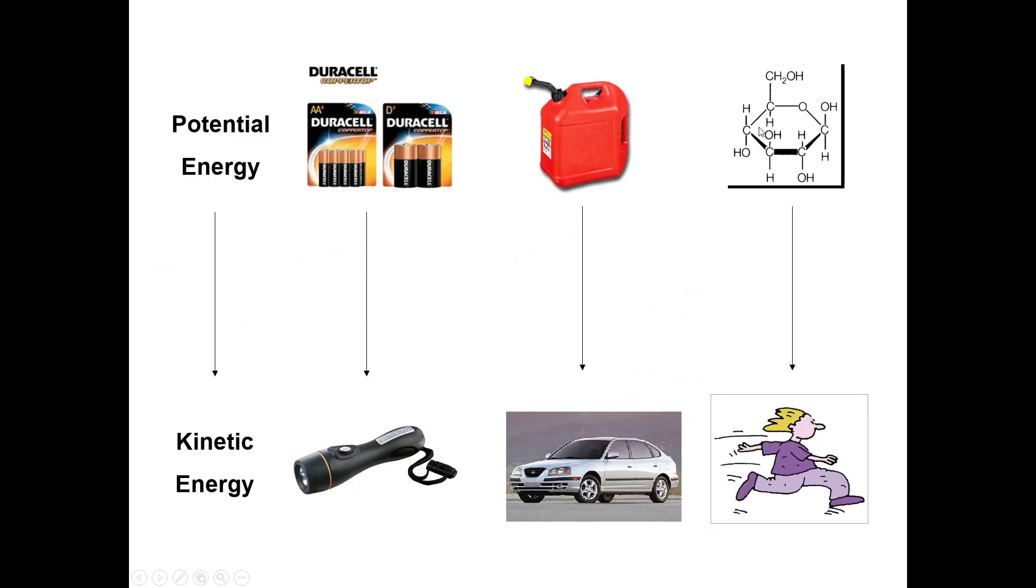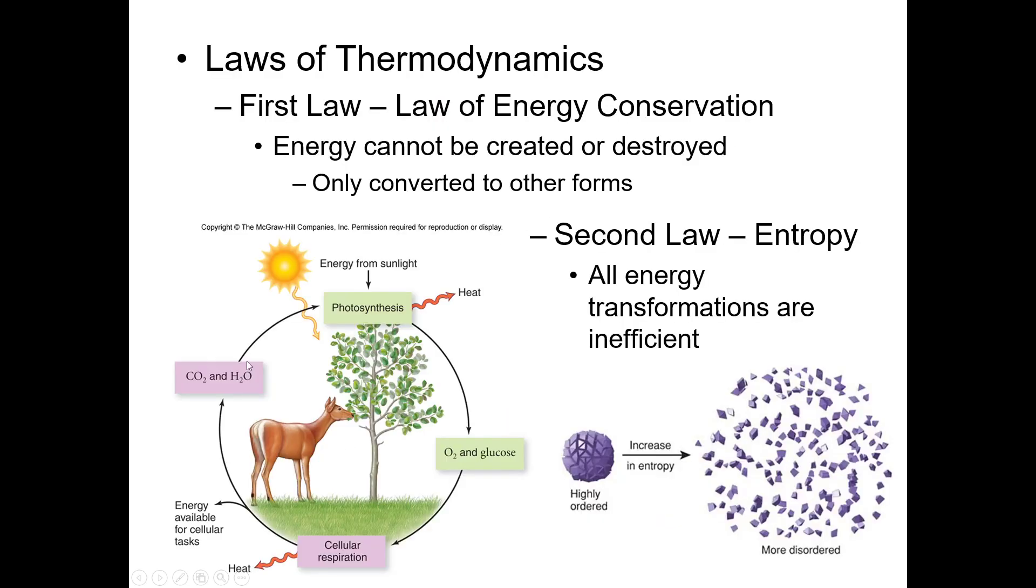Just need to understand that the bigger the molecule, the more covalent bonds it has, the more energy it has. That's the whole point of this: to understand that covalent bonds are our biological energy and that's what we use. This is where we're going with photosynthesis and glucose metabolism.